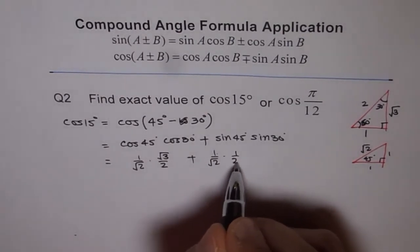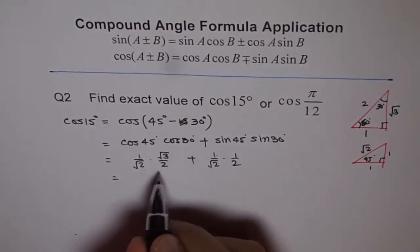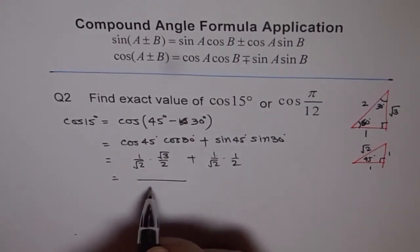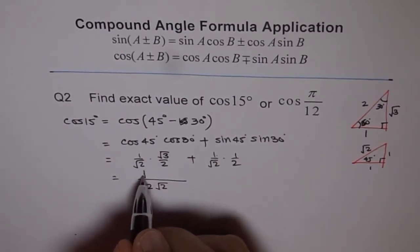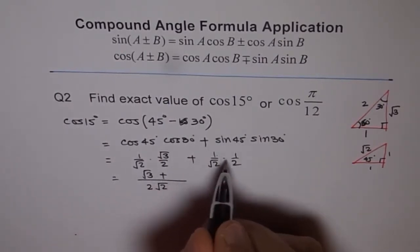So it is 1 over 2. Now we have same denominators. Now we have common denominator of 2 square root 2. And the numerator we have square root 3 plus 1.